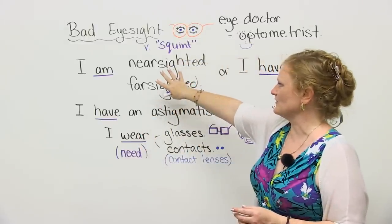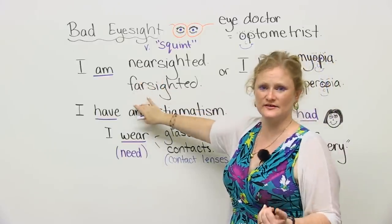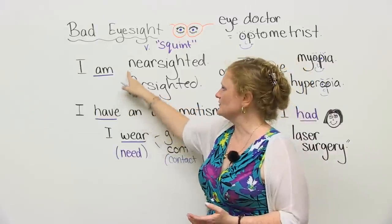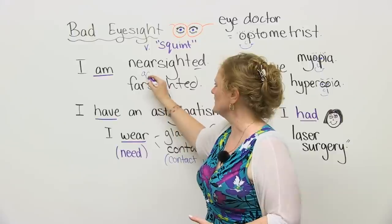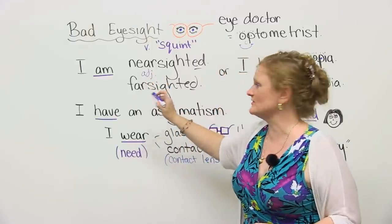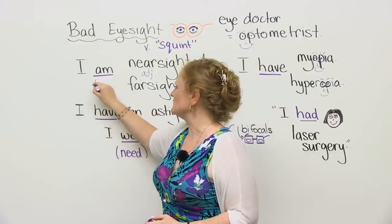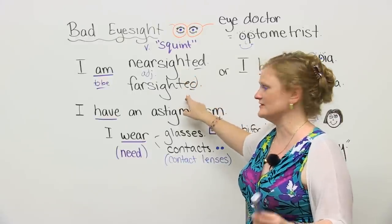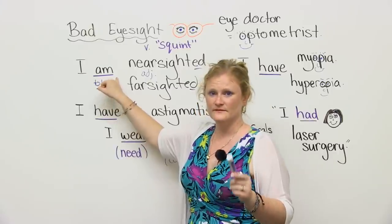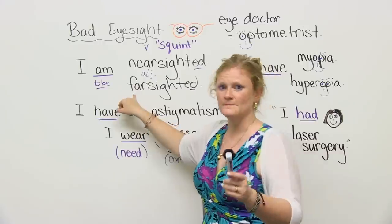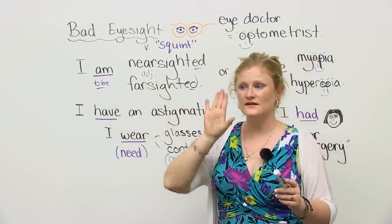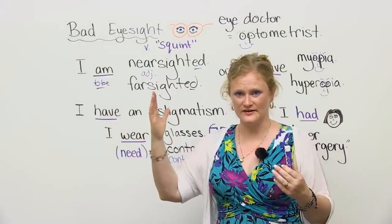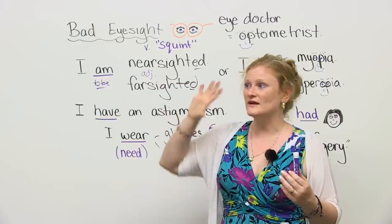The very first thing is we have two adjectives to describe why you may have bad eyesight. These are the most common phrases that people use. Because these two words end in "-ed", they are adjectives. Like every adjective in English, you have to use the verb "to be". So you cannot say "I nearsighted" — you have to say "I am nearsighted" or "I am farsighted". Nearsighted means you cannot see things that are far away. So when you wake up in the morning, depending on how bad your eyesight is, you can't read the clock.